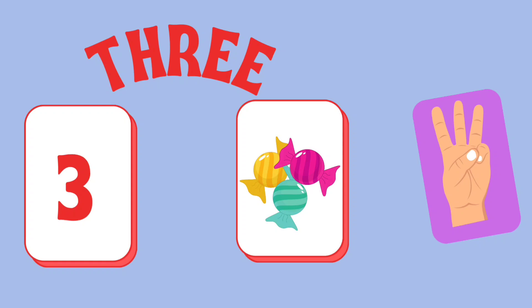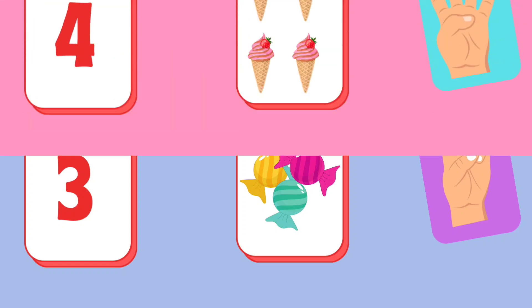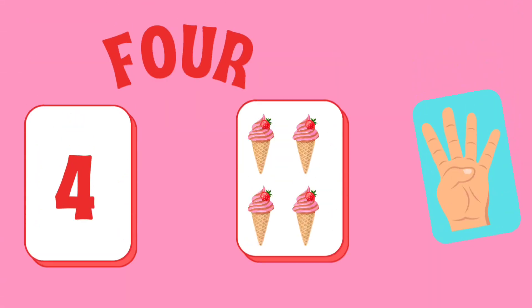T-H-R-E-E, 3. Open pointer finger, middle finger and ring finger to show 3. F-O-U-R, 4. Open all the fingers except thumb to show 4.